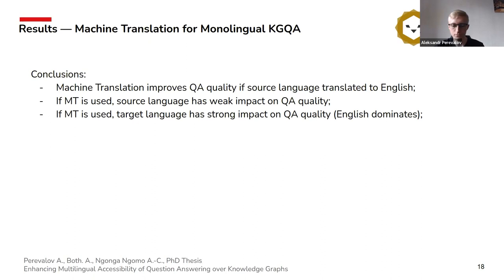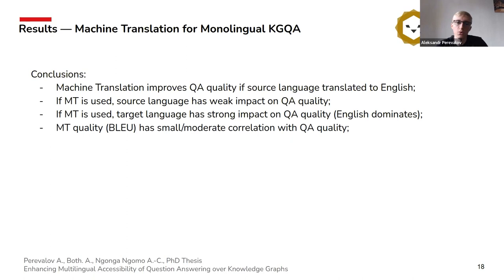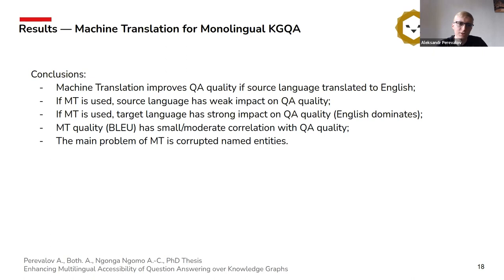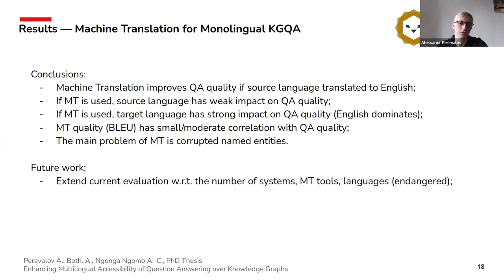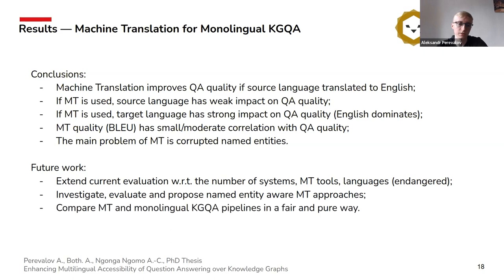Machine translation quality had a small correlation with question answering quality, because it really depended on how well the question answering systems perform on a particular language. The main problem of machine translation in this regard is not the quality metric itself — the main problem is that machine translation corrupts named entities, and named entities are of course very important in the process of answering questions. For future work, we want to extend this work in many dimensions, evaluate and propose named-entity-aware machine translation approaches, and compare machine translation performance with monolingual knowledge graph question answering systems.